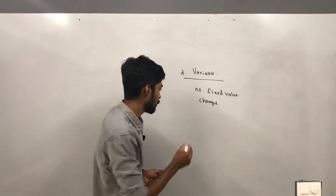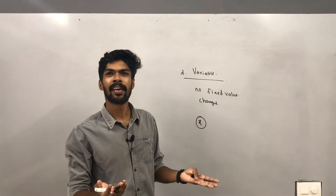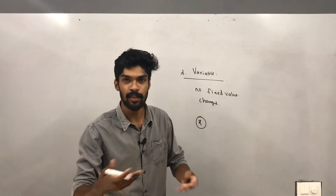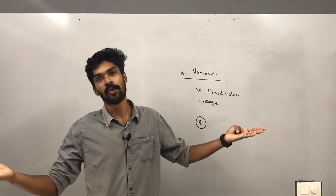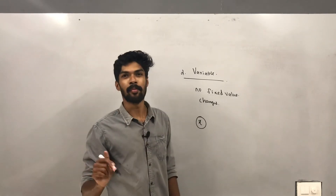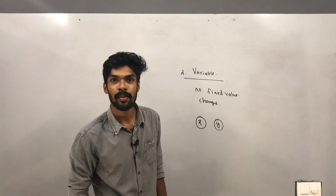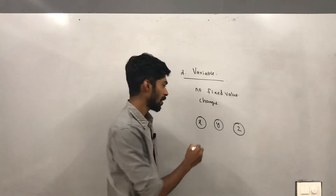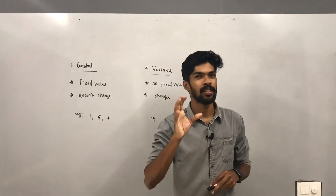For example, x is a variable. x can take any values: x equals 1, x equals 2, x equals 3, x equals 5, x equals anything. So x is a variable. Other examples: y is a variable, z is a variable, p is a variable.